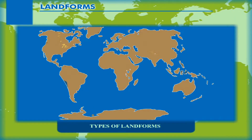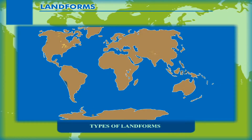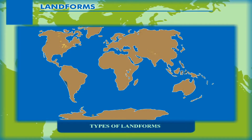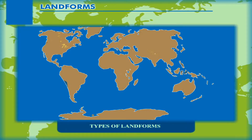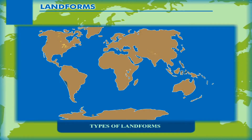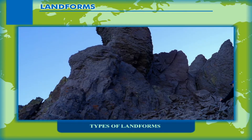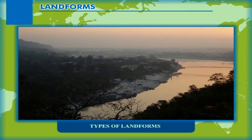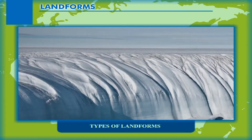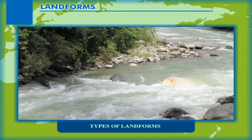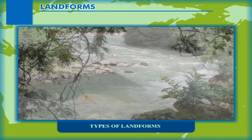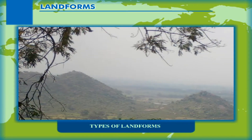Types of Landforms. A landform is a natural feature of the solid surface of the earth. Landforms are either formed by the internal processes of the earth, such as block mountains, rift valleys, etc., or may be shaped by external agencies such as ice, running water, winds, or growth of forests, etc.